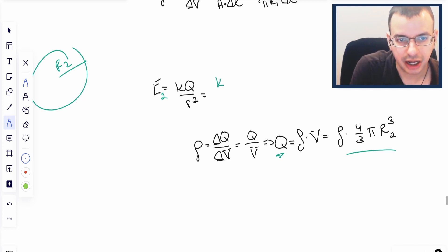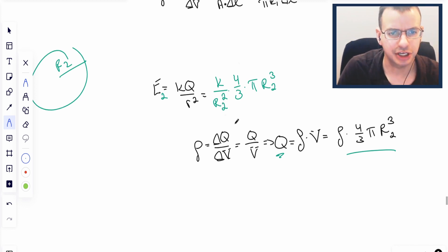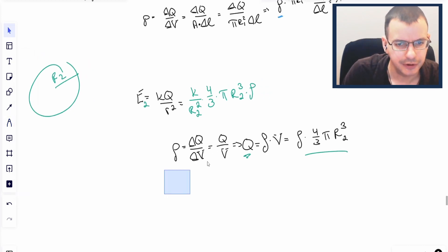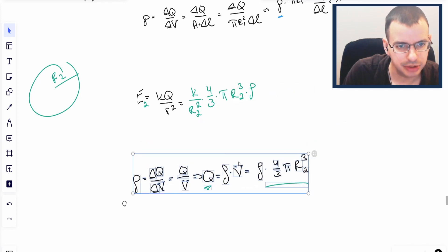And this is specifically electric field 2. So it's going to be K over R2 squared times 4 thirds pi R2 cubed times rho.